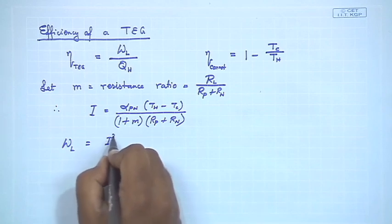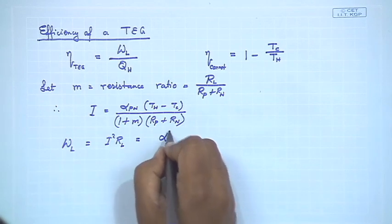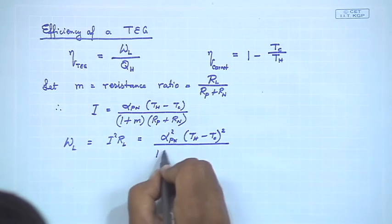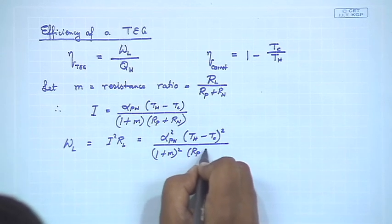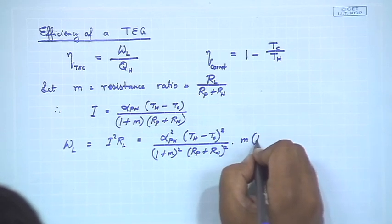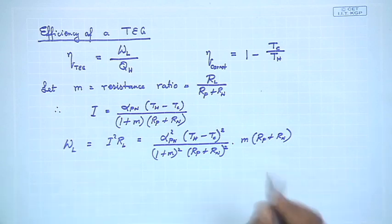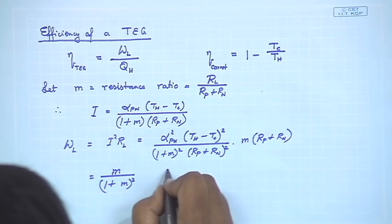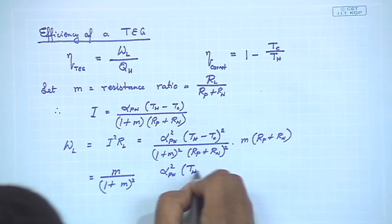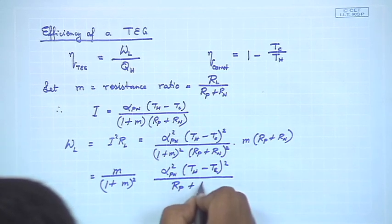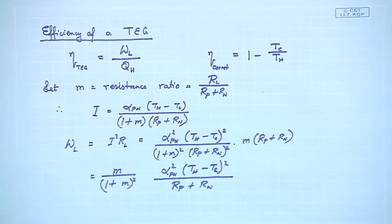The external work W_L = i² · R_L, which works out to: W_L = [α²_{pn} · (T_h − T_c)² / ((1+m)² · (R_p + R_n)²)] · m · (R_p + R_n). After cancellation, this simplifies to W_L = m / (1+m)² · α²_{pn} · (T_h − T_c)² / (R_p + R_n).